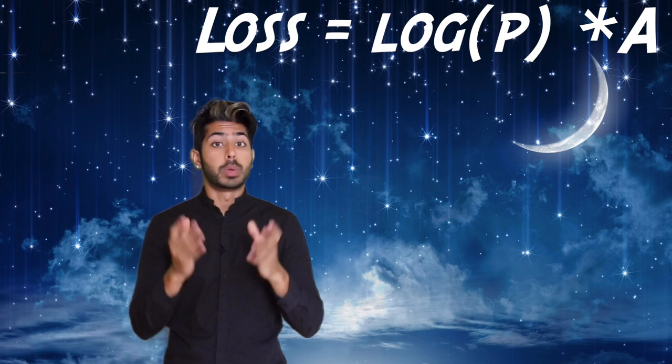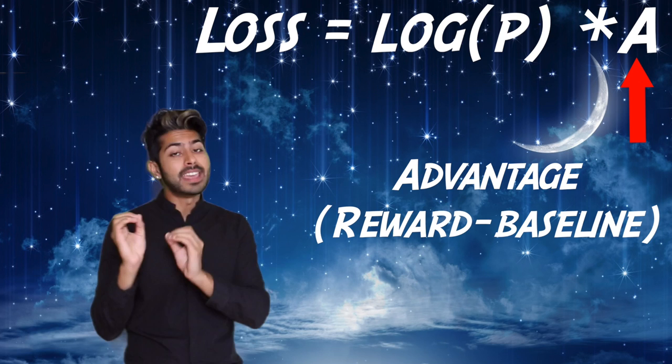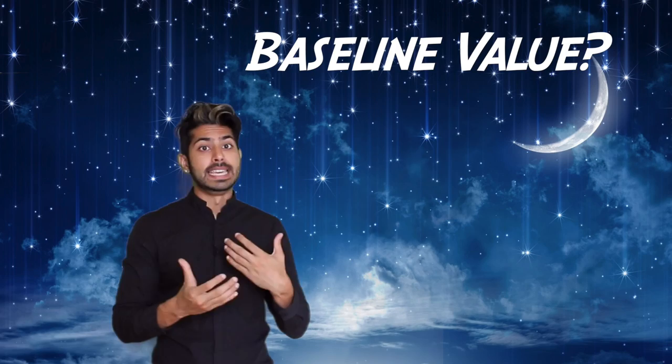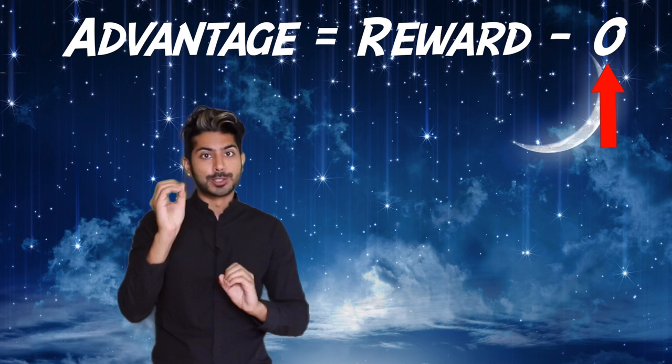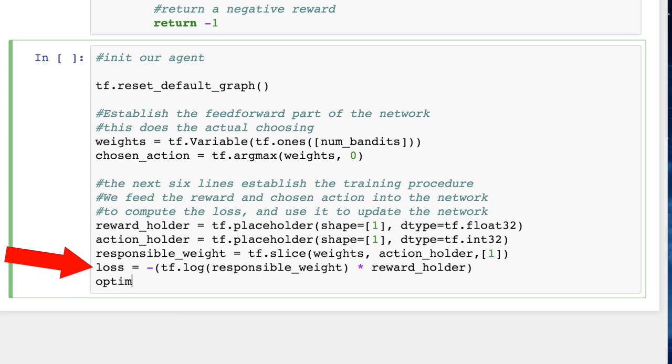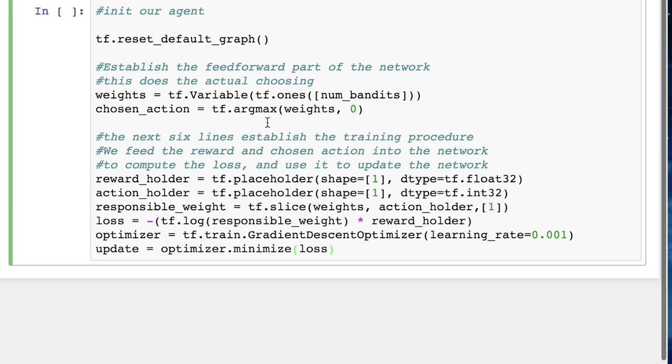So this is what our policy loss equation looks like. This is what we want to minimize. This character is the policy which we take the log of, and A is the advantage. This is a critical part of RL. It's a measure of how much better an action was than some baseline. There are different ways of deciding what that baseline is, and it can get pretty interesting. But right now, we'll just set it to zero, so we can just think of it as just a reward we receive for each action. This loss function lets us increase the weight for actions that give a positive reward value, and decrease them for actions that give a negative reward value. When we define our loss function programmatically, we can see that it corresponds to the equation where reward holder is the advantage.